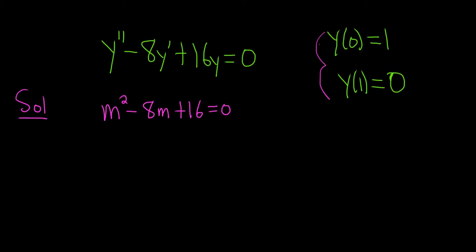So m squared, m to the first power, and then 16y becomes 16. This should factor. I believe this is m minus 4 squared, and this is equal to 0. You can check that this does actually factor. So you get m equals 4. And this is a solution or a root of multiplicity 2.